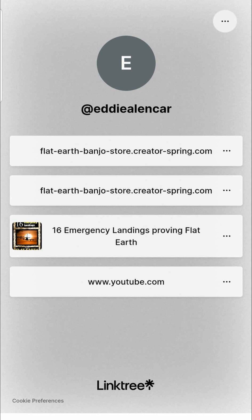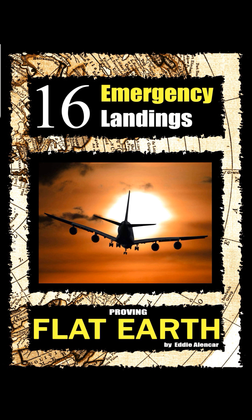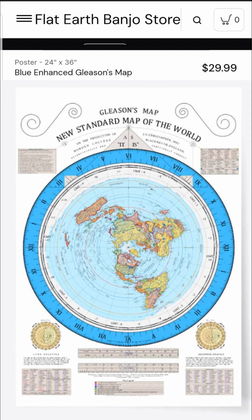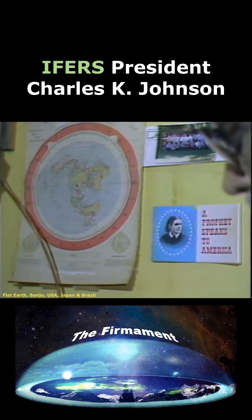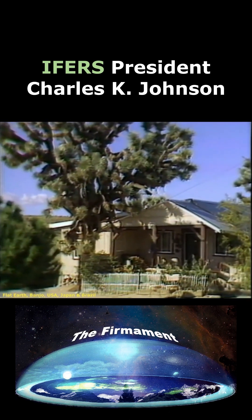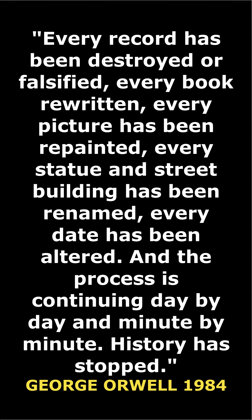Visit the links above now and order my book, 16 Emergency Landings Proving Flat Earth. Visit my online store now and order the new Enhanced Gleason's Flat Earth Map. This map used to be in every school and library in the nation before NASA was created in 1958, when the maps were ordered removed. Have your Gleason's map hanging on the wall in your house, where no government can take it down. Here is a quote from the book 1984 by George Orwell: 'Every record has been destroyed or falsified. Every book rewritten. Every picture has been repainted. Every statue and street building has been renamed. Every date has been altered. And the process is continuing day by day and minute by minute. History has stopped.' Order your map now.